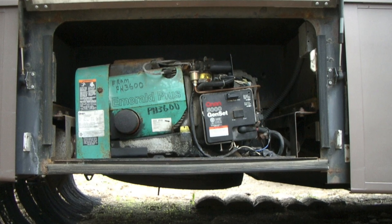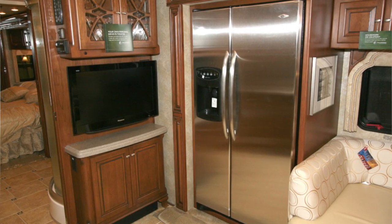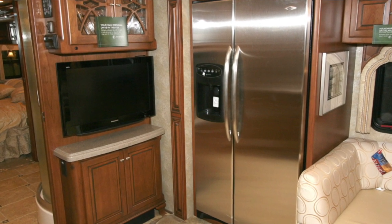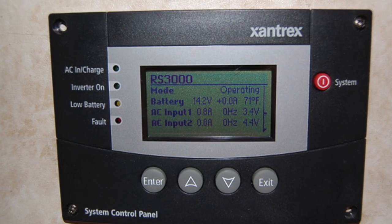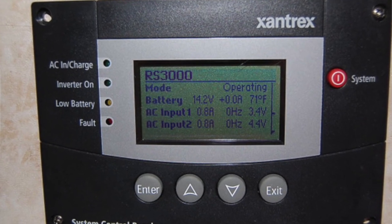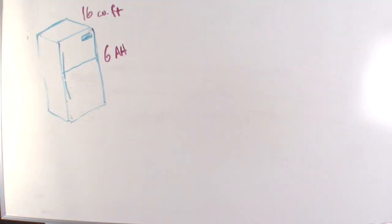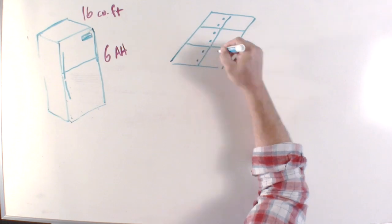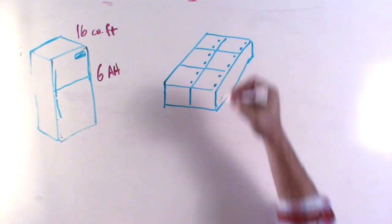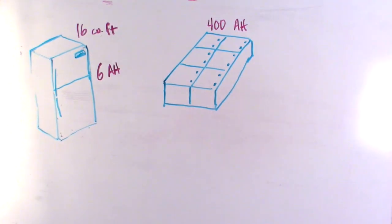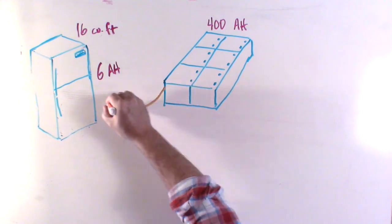I can tell you firsthand because our last two coaches have had residential refrigerators and it is a constant struggle to keep the batteries from crashing when you're boondocking. You'll be checking your system monitor more than you check the time. But Josh, a 16 cubic foot residential refrigerator only draws six amps per hour and you have like 400 amp hours in your batteries so you can run that fridge for days.